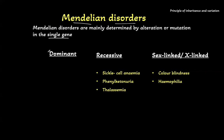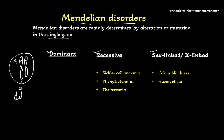Mendelian disorders can be dominant, recessive, or X-linked. Dominant disorder means we have two copies of each chromosome and therefore two alleles of each gene. If it is a dominant mutation, if one of the genes is defective, it will give the defective phenotype. If it is a recessive disorder, both of the genes have to be defective to give a defective phenotype.